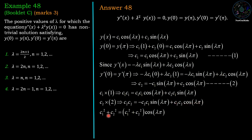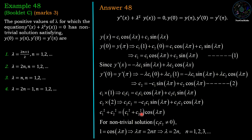Now c₁² + c₂² cannot be zero since we want a non-trivial solution. Dividing both sides by c₁² + c₂² gives cos(λπ) = 1. This means λπ = 2nπ, so λ = 2n, which is option number 2. Therefore, option number 2 is the correct answer.